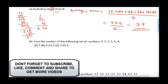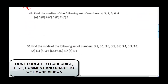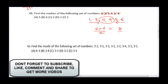Question 49 says: find the median. Remember, when you hear median, the first thing you need to do is rearrange the numbers in ascending order. The given numbers are 4, 3, 1, 5, 6, 4. Arranged in order: 1, 3, 4, 4, 5, 6. Since there are six numbers, the middle falls between the 3rd and 4th values, both of which are 4. So the median is (4 + 4) ÷ 2 = 4. The answer is B.